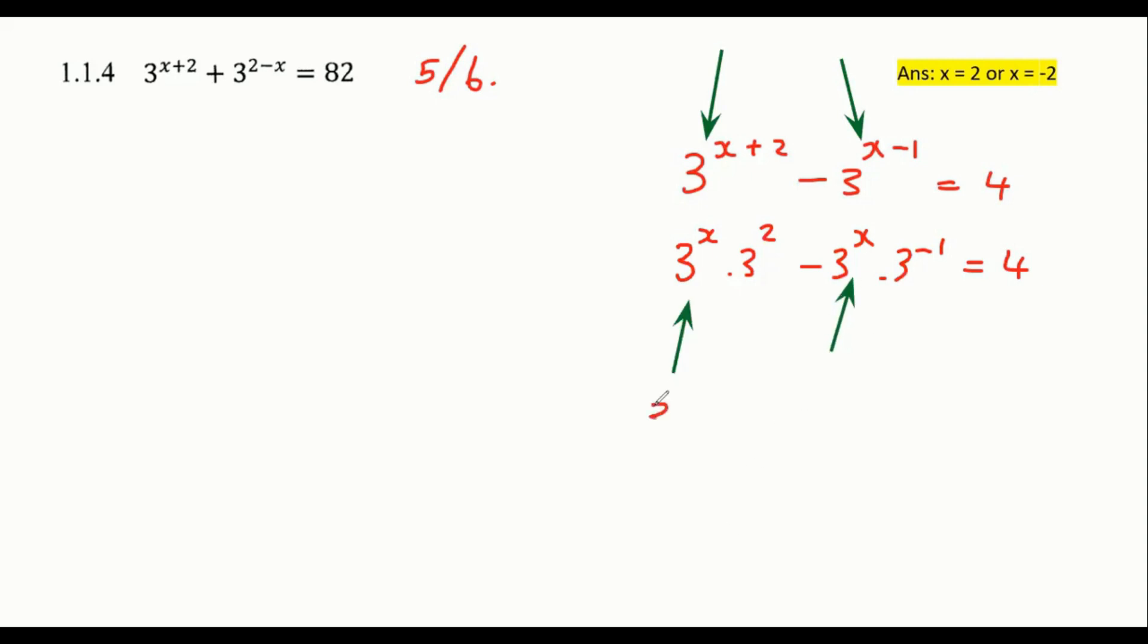And that would be three to the power of X. So you would take it out and then you would be left with three to the power of two minus three to the power of minus one equals to four. And then you would just take this number over here and you would divide on the other side and then you would end up with something quite easy. That's how that type of question would work.